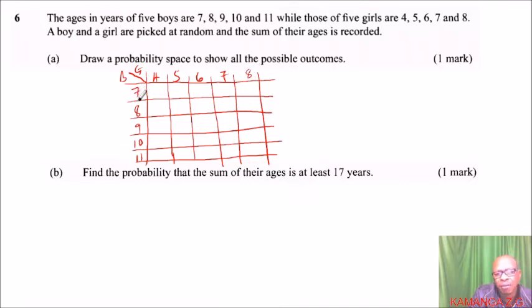So what you do is add the age of a boy and a girl, and that will give us... 7 plus 4, that will give us 11. 7 plus 5, that is 12. This will give us 13. This is 14. 7 plus 8, that will give us 15. So we are going to do all like that and we fill this table.